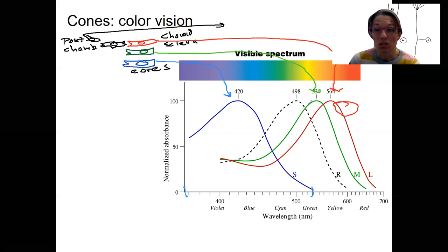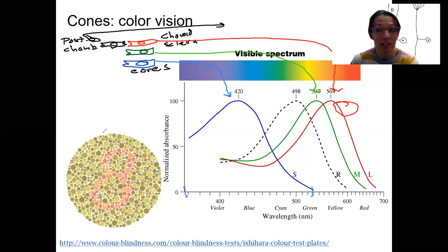Some species have four types of cones. Kind of cool. So for those people who maybe can't see a number here, it's because you're red-green colorblind. I'm not trying to diagnose anyone here, but there is actually an eight here. You can go to this website and do other color plate tests to detect other types of color blindness as well.